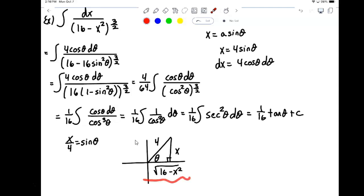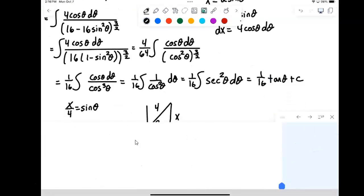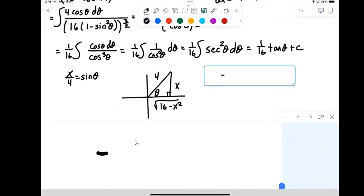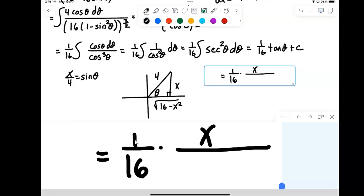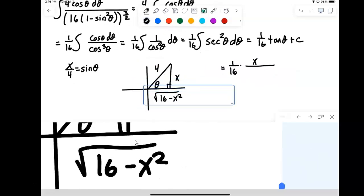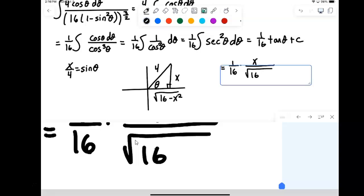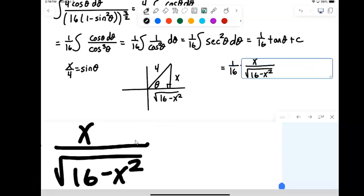In this case, tangent would be opposite, which is x over the adjacent square root of 16 minus x squared. All right, plus a constant.